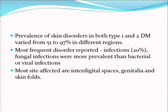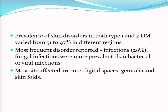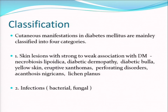When we were students, we were taught to examine the interdigital space between the last little toe and the fourth toe to look for tinea pedis - it's very common, and from there cellulitis starts. These are still good markers of diabetes. How do we classify these manifestations?